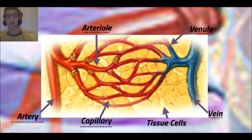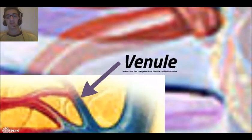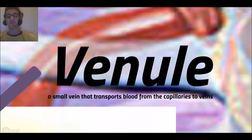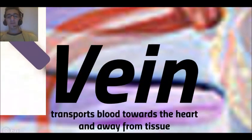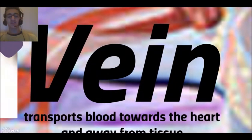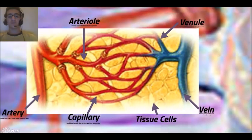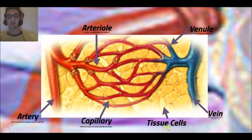That's where the gas exchange happens. The venule is a small vein that transports blood from the capillaries to veins. And the vein transports blood towards the heart and away from the tissue — and that's the tissue right here.